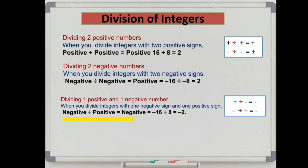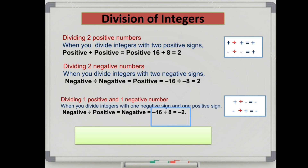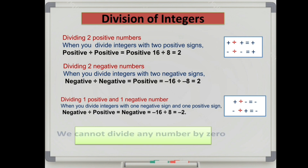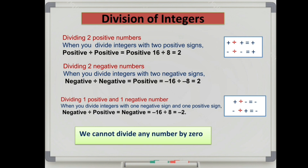For example, minus 16 divided by 8: 16 is a negative value and 8 is a positive value, so the answer is minus 2, which is a negative sign. Remember: we cannot divide any number by 0. Let us make these rules easy by writing them in a tabular format.